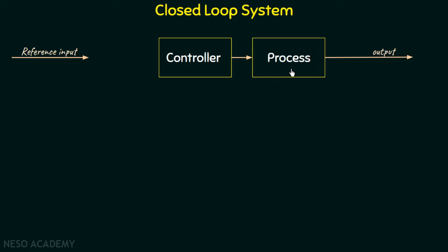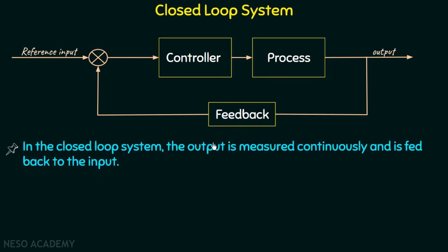In order to maintain the desired output, we need to measure the output continuously, and we do this by using a feedback signal. In closed loop systems, the output is measured continuously and is fed back to the input, where the error with respect to the desired output is determined. We call this unit the error detection unit. Then this signal goes to the controller, which controls the amount of input according to the desired response, and the controlled input goes to the process section, giving us the desired output.